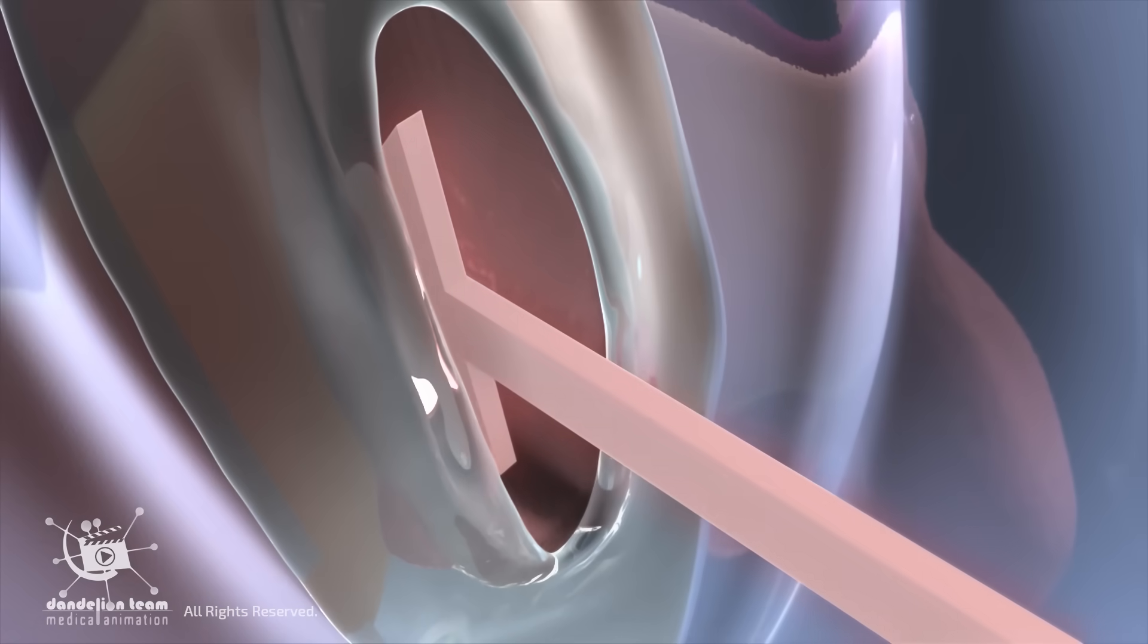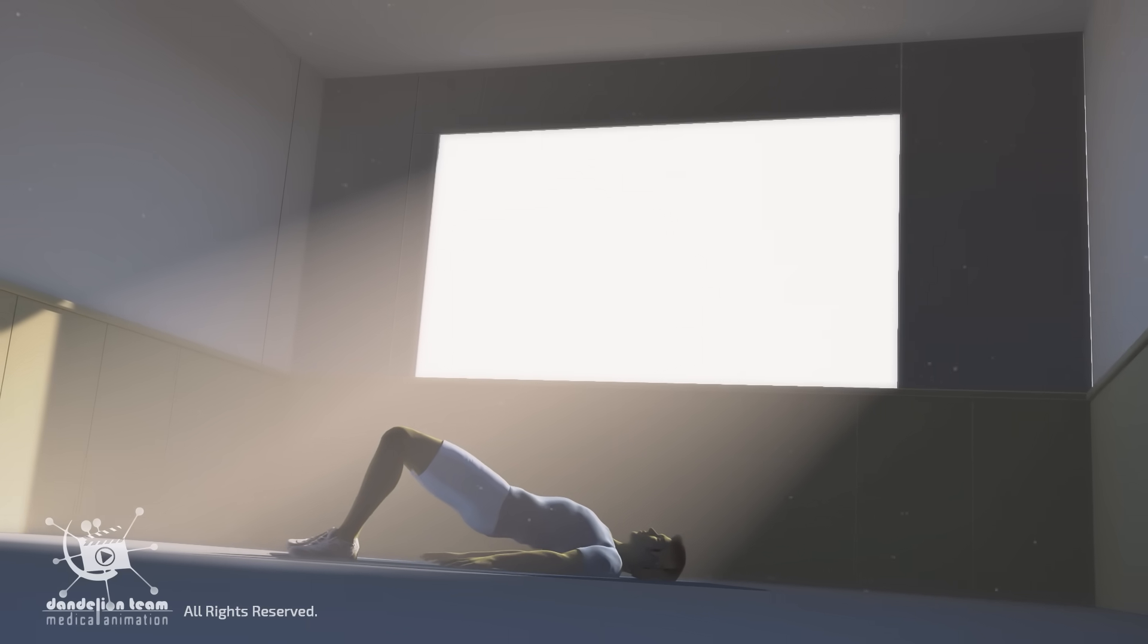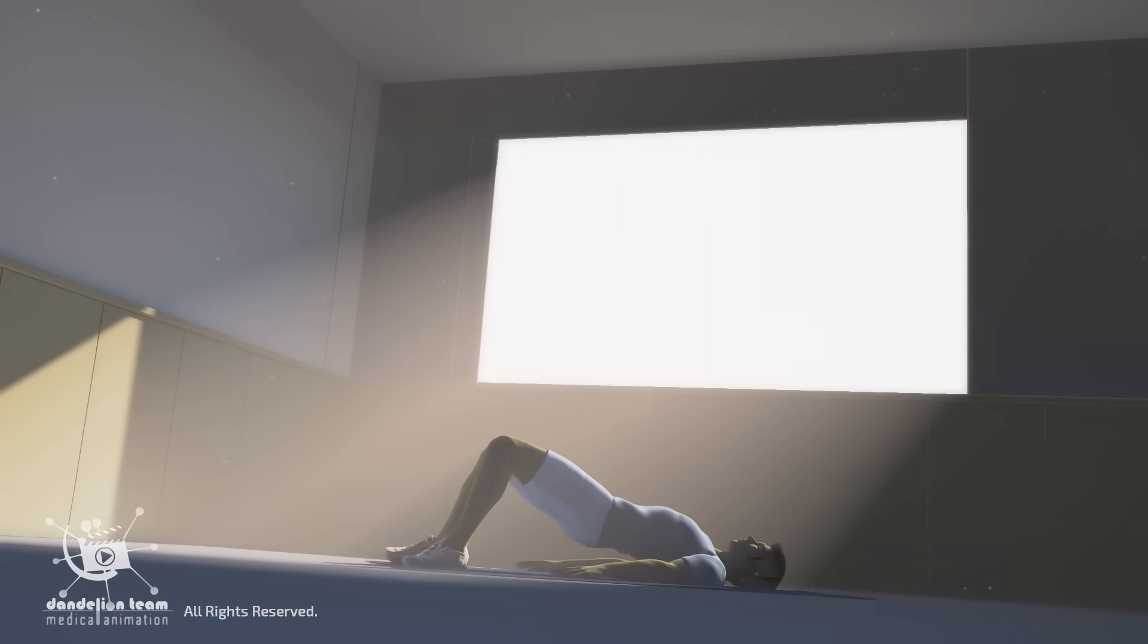Behavioral therapies such as the start-stop method, the squeeze method, and pelvic floor exercises can help men gain more control over ejaculation.